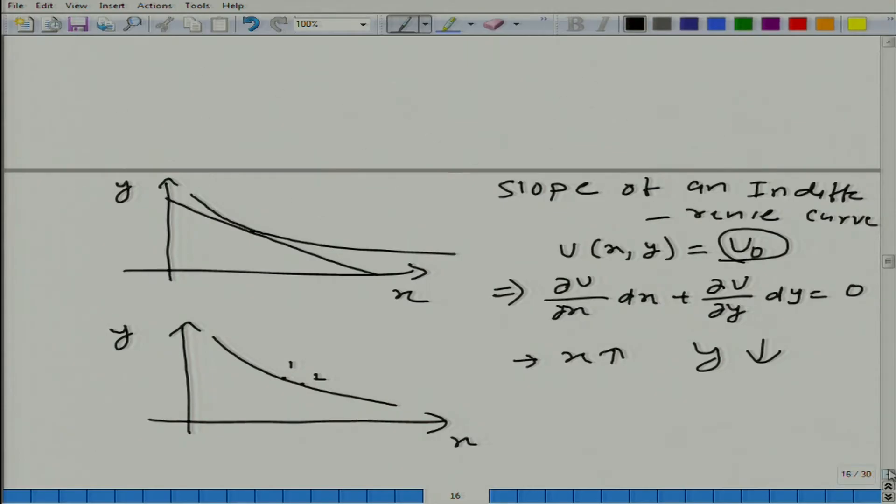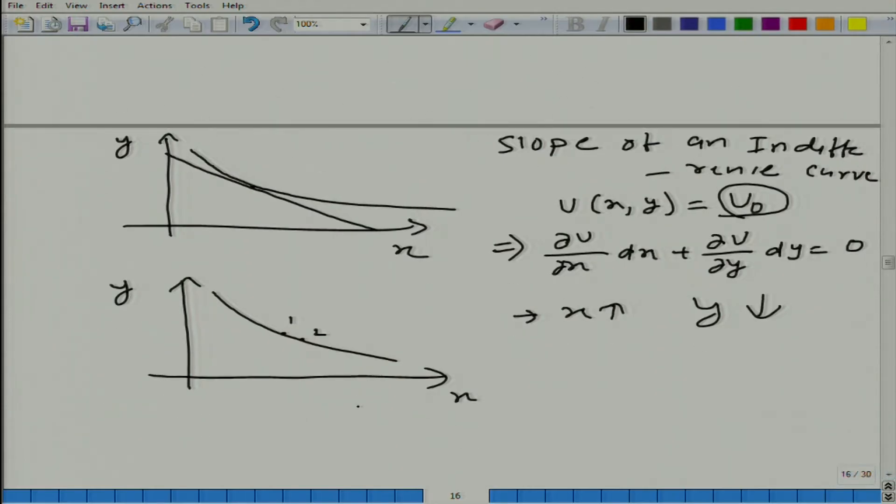So, x is going up. If x is going up, how much increase in the utility you will get? What is ∂u/∂x? ∂u/∂x is nothing but rate of change in u with respect to change in u with respect to x.